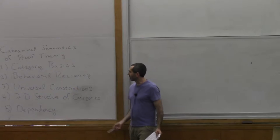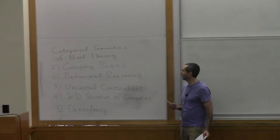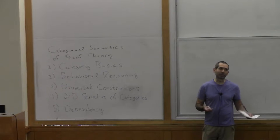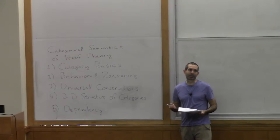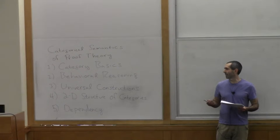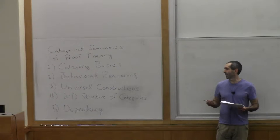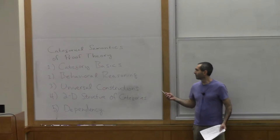This is the basic outline of the lecture. Today we're just going to talk about the basics of category theory. Next time we're going to talk about what I call behavioral reasoning. That's the way that you have to reason when we can't do element-wise characterizations of the objects of study that we're talking about. The third lecture will be about universal constructions. That's how we define things in category theory, things like the product that Bob told you about earlier. We're going to see how we can use many such constructions and that they're going to be defined in a behavioral fashion. The fourth day will be about the two-dimensional structure of categories.